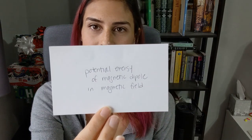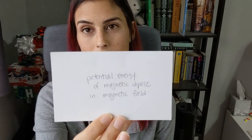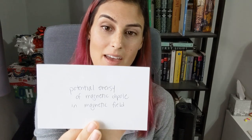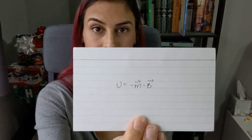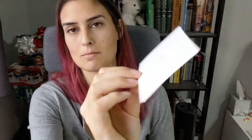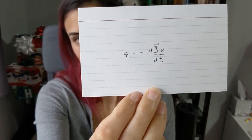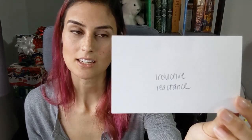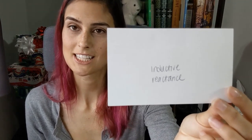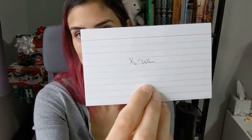The potential energy of a magnetic dipole in a magnetic field: U equals negative M dot B. EMF — the electromotive force, which is not actually a force — is denoted by epsilon and equals the negative derivative of phi sub B with respect to time. Inductive reactance: X sub L equals omega times L.